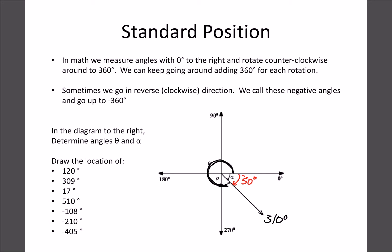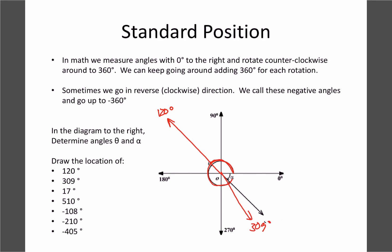Let's look at a few more examples using the same grid. Where would 120 be located? We'd go past 90 and another 30 degrees, giving us 120. For 309, we know 360 is all the way around, so 309 would be not quite all the way — something like that. And 17 degrees would be pretty small, so it would be somewhere just past zero.